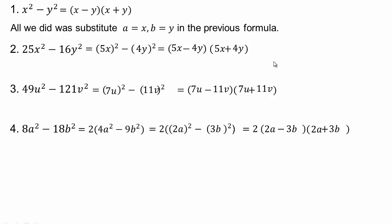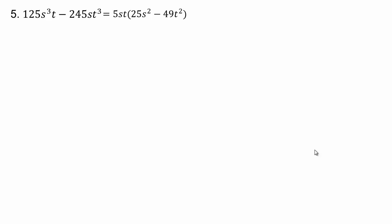Then complete it: 2a minus 3b and 2a plus 3b. Would it matter whether I write 2a plus 3b times 2a minus 3b? The answer is no, because of the commutative property of multiplication. Now try the next one — factor out the greatest common factor first. They share a 5, they share an s, and they share a t. Now we have difference of squares — go ahead and factor it in.